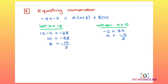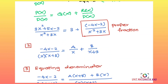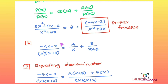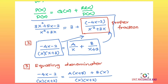Substituting x = −3 into the equation gives B = −10, and substituting x = 0 gives A = −2/3. We then substitute the values of A and B back into the partial fraction equation. Remember, our final answer must be in terms of the full expression including the polynomial part from the long division.